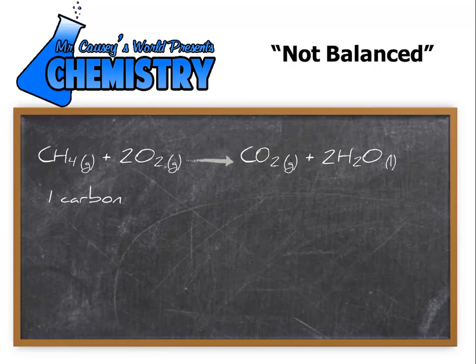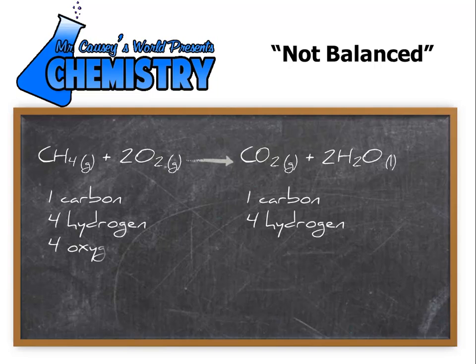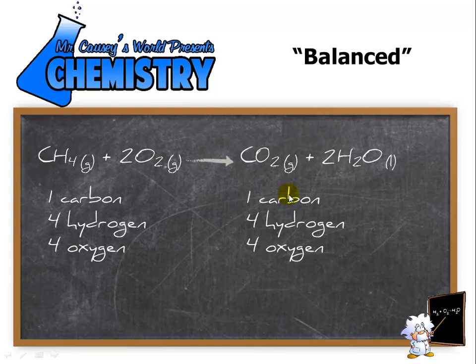And now we've got one carbon, four hydrogen on both sides, and four oxygen on both sides. Voila, it's balanced. So now we have a balanced equation.